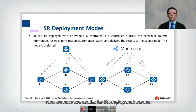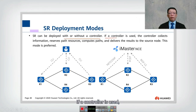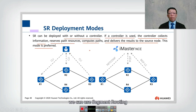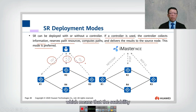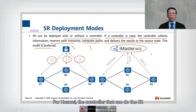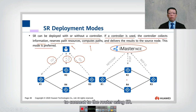Segment routing can be deployed with or without a controller. If a controller is used, it collects information, reserves path resources, computes the path, and delivers the result to the source node — this mode is preferred. Without a controller, we use CLI, which means scalability may be limited and path computation must be done manually by humans. For Huawei, the controller for segment routing is called iMaster NCE.